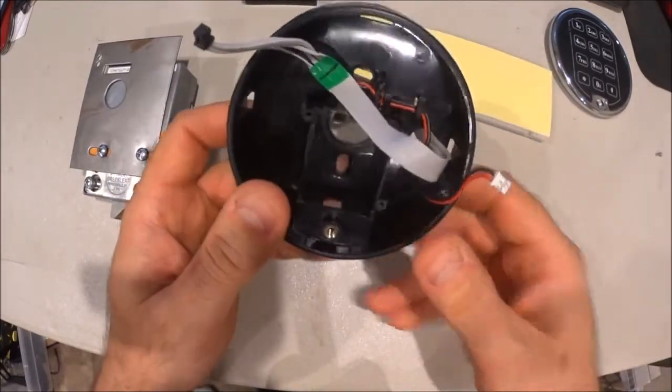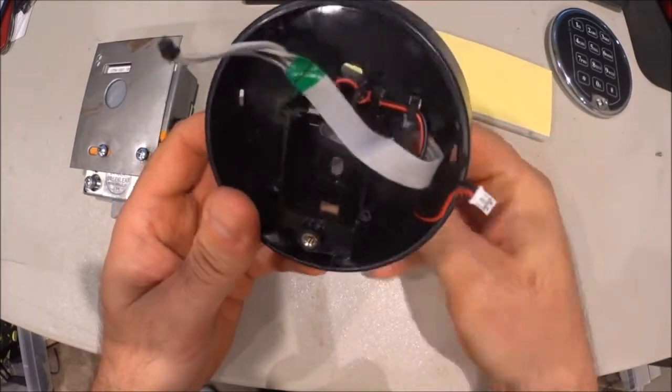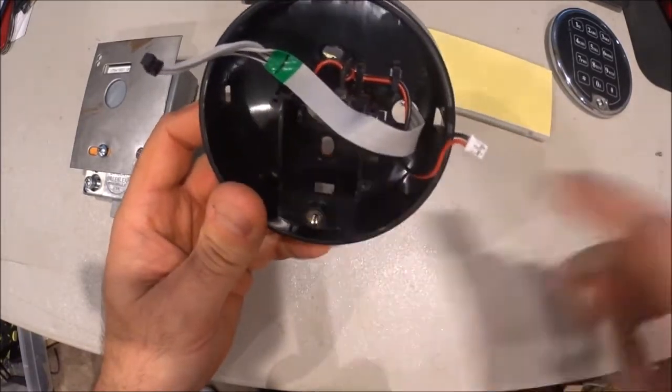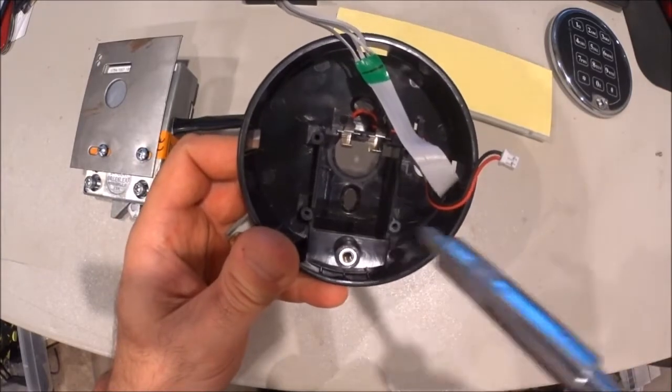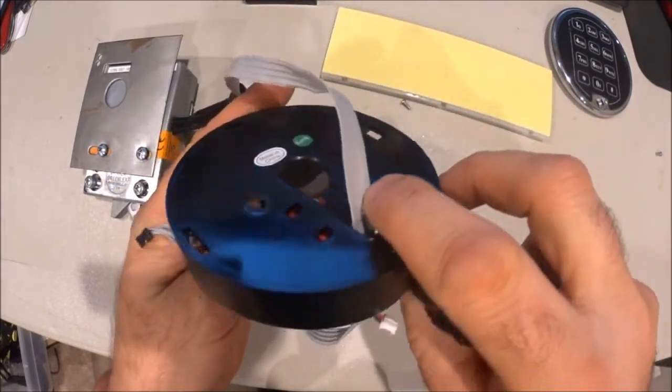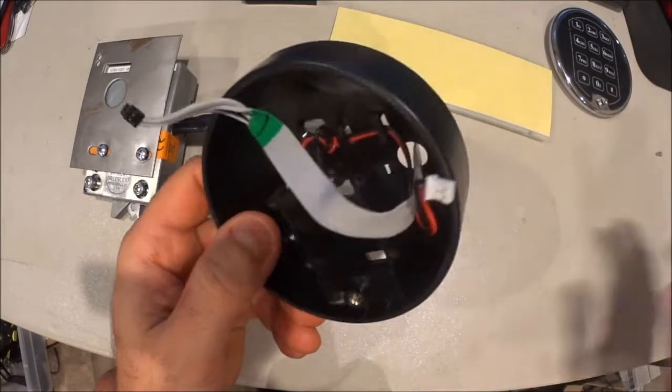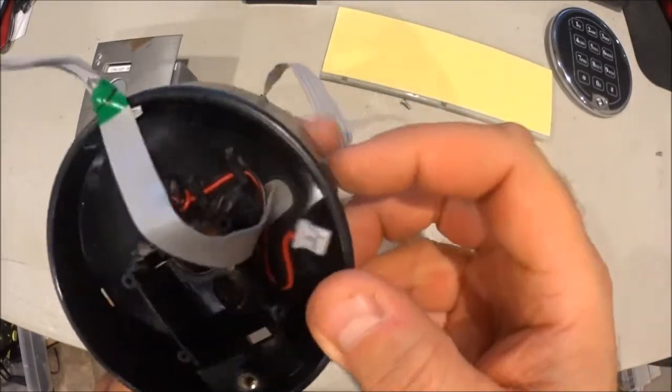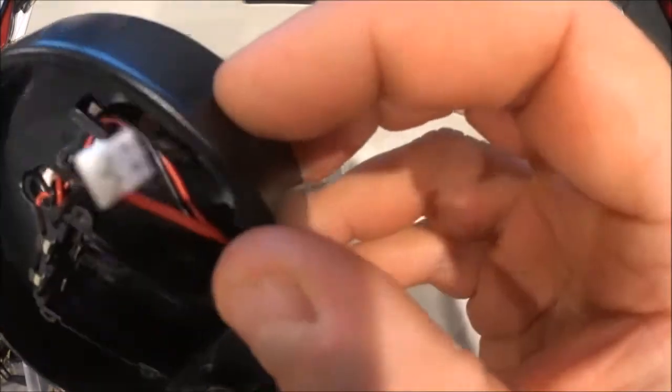Now there's another Phillips screw inside here, find it right there. Take that screw out and this whole plastic apparatus will come off your safe door and you can pull these cables out like so.